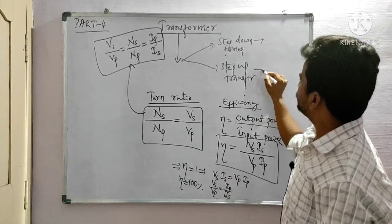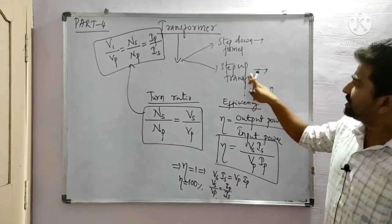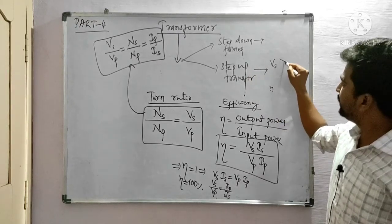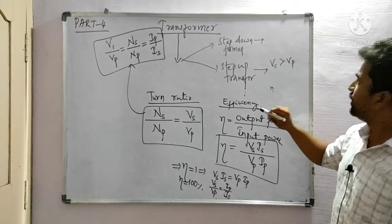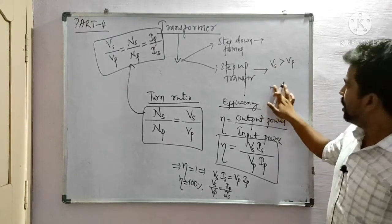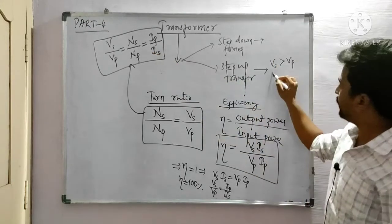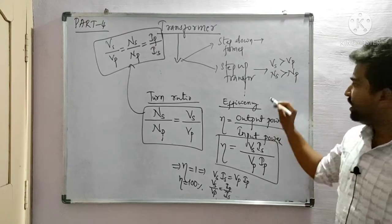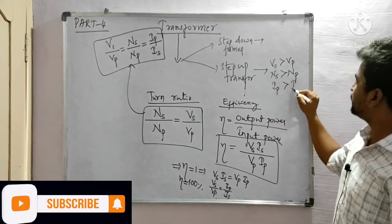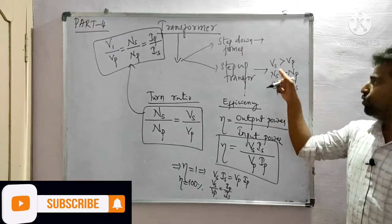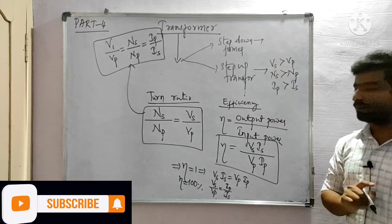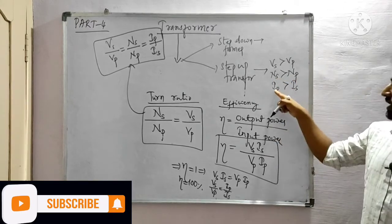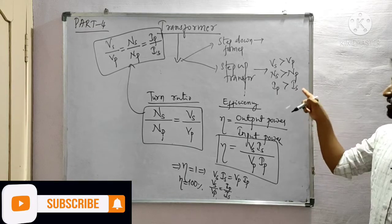In a step-up transformer, the output voltage is greater than the input voltage. Since output voltage relates to the number of turns, the number of turns in the secondary must be greater than the number of turns in the primary. However, the current in the primary is greater than the current in the secondary — voltage and current have a reversal relationship.